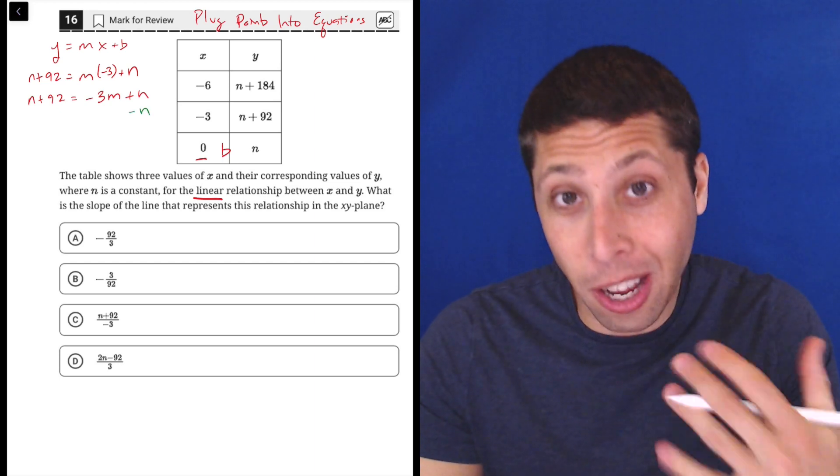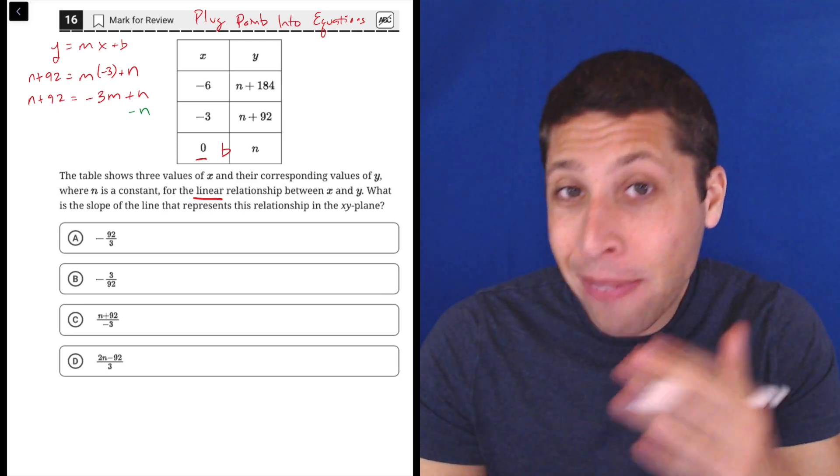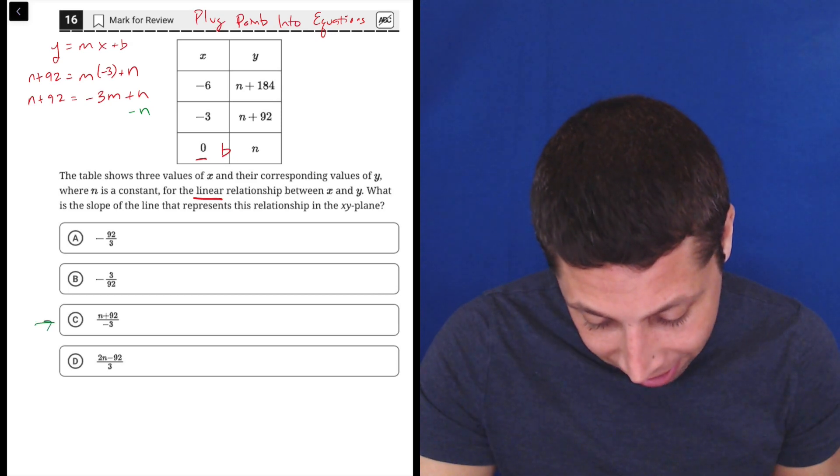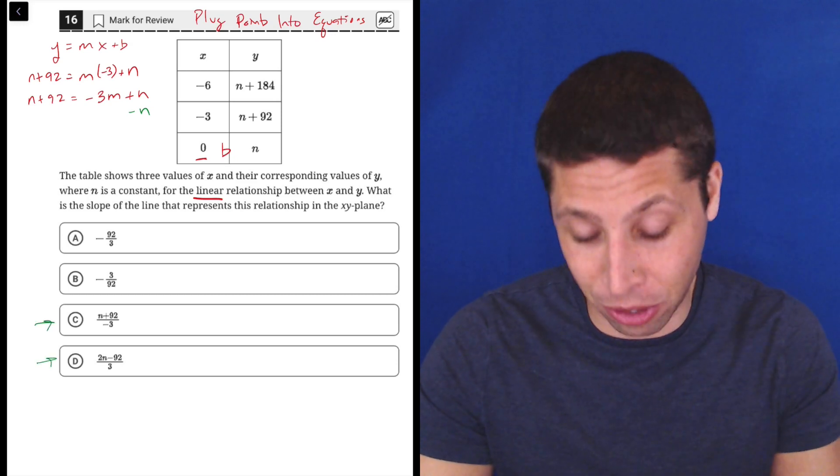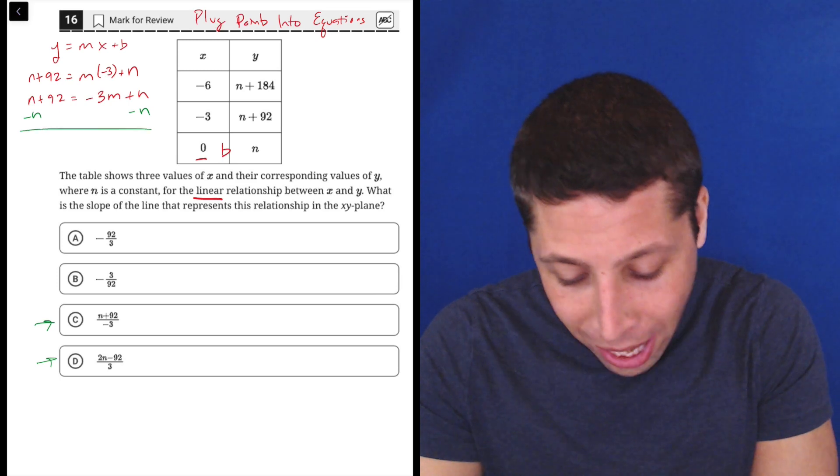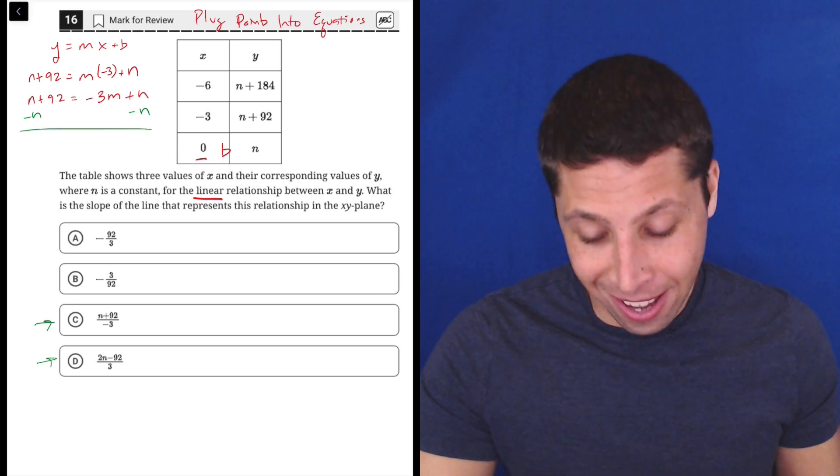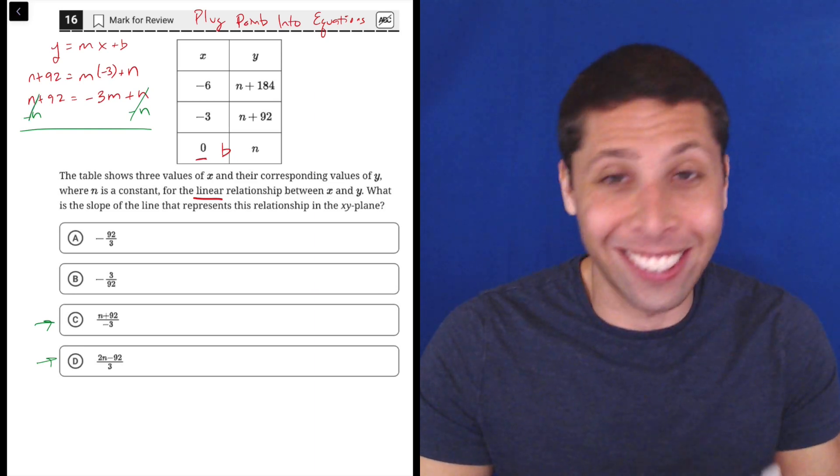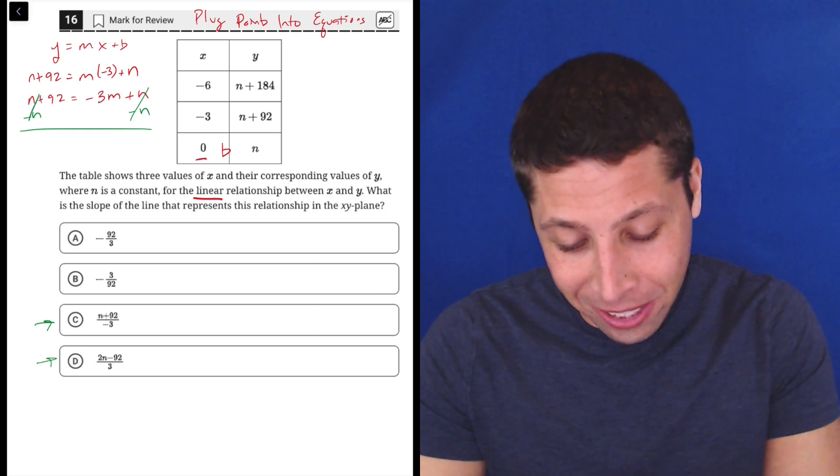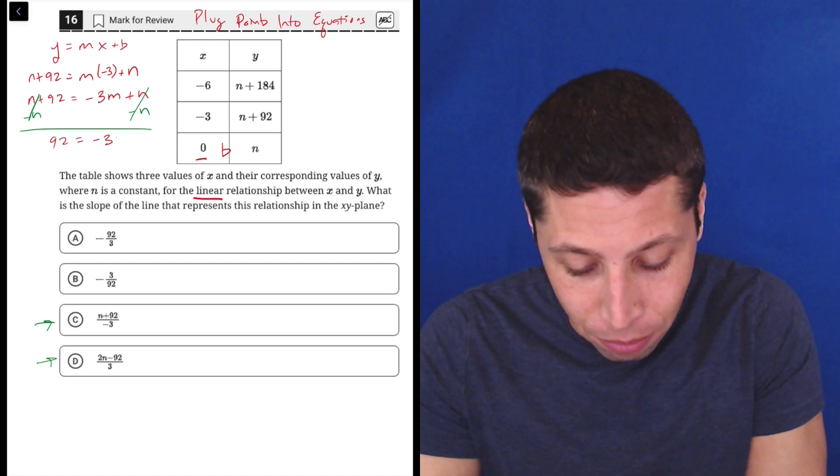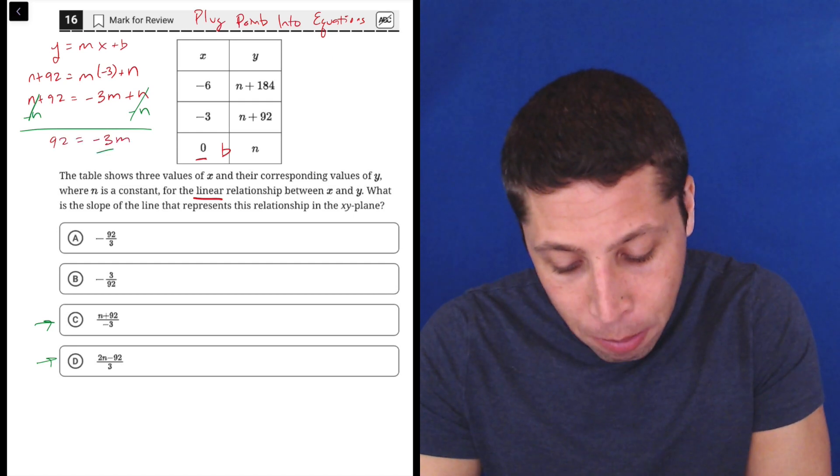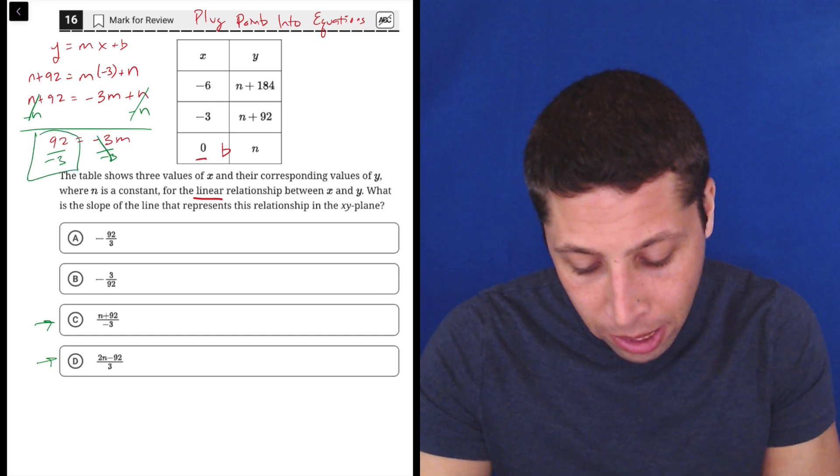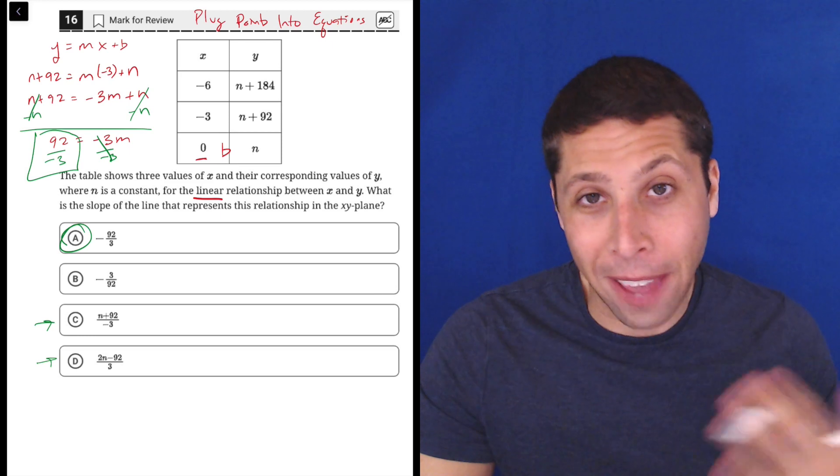N plus 92 is equal to negative 3M plus N. If we continue with the moves of algebra, we would say I want to solve for M. And that M might have N in its solution. Look at the choices in C and D. They have N's in them. N being in there is not the worst thing in the world. But watch. If we subtract N from both sides, the N's cancel out on the right side, which is what we wanted, but they also cancel out on the left. So this works out really nicely. Now we have 92 is equal to negative 3M and we would divide both sides by negative 3 to get M alone. And there it is. 92 over negative 3 is the same as choice A. And that's the answer.